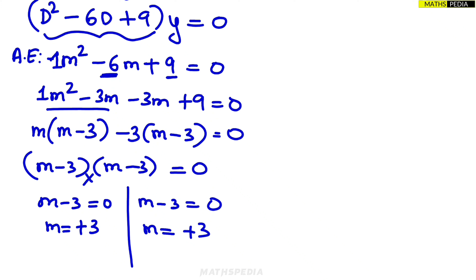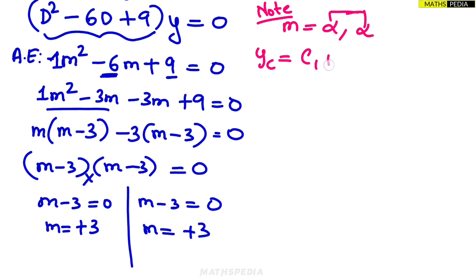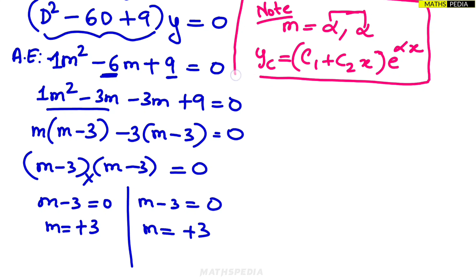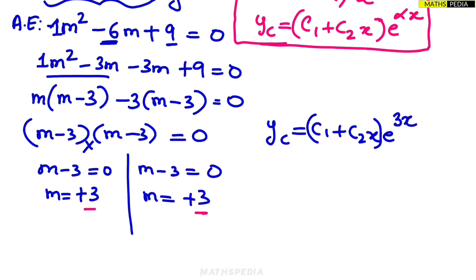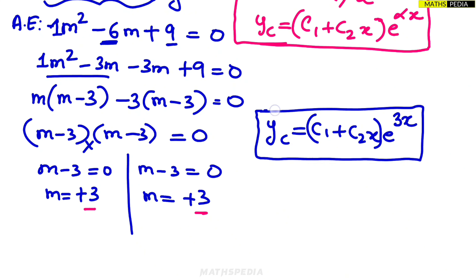When we get real and equal roots, both equal to α, the complementary function is: yc = (c1 + c2·x)·e^(αx). Since our equal roots are both 3, substituting α = 3 gives: yc = (c1 + c2·x)·e^(3x). Make sure to include the bracket.